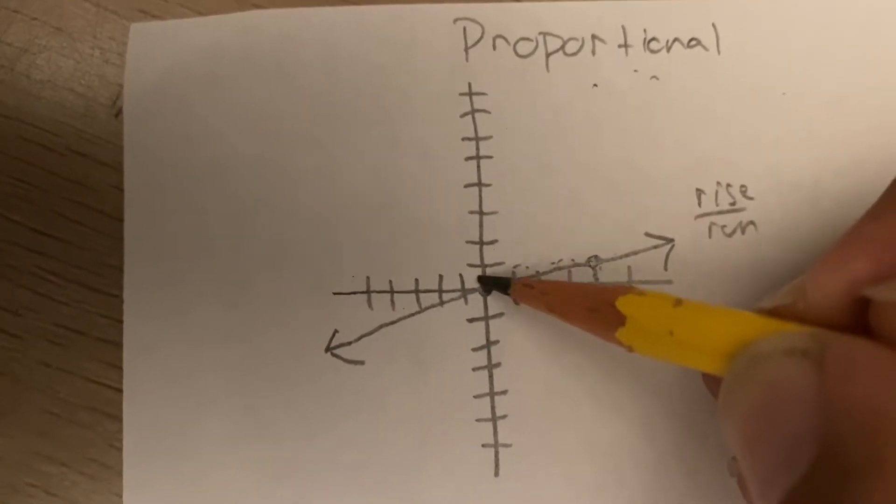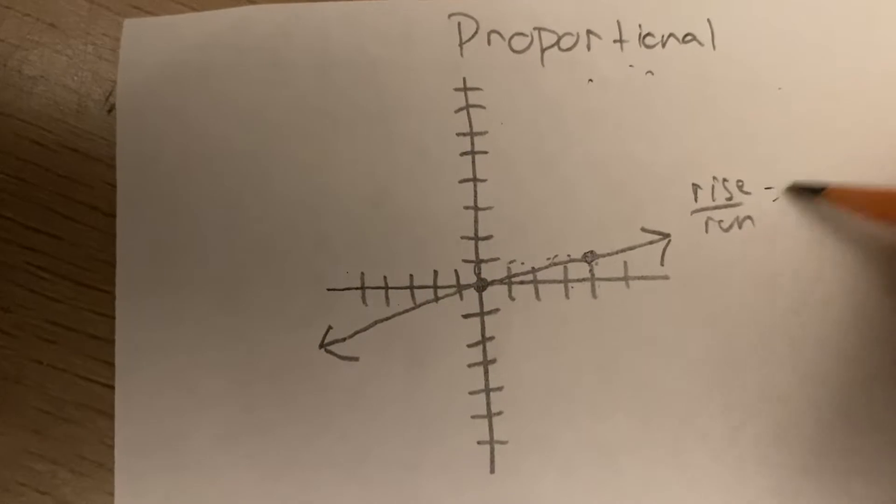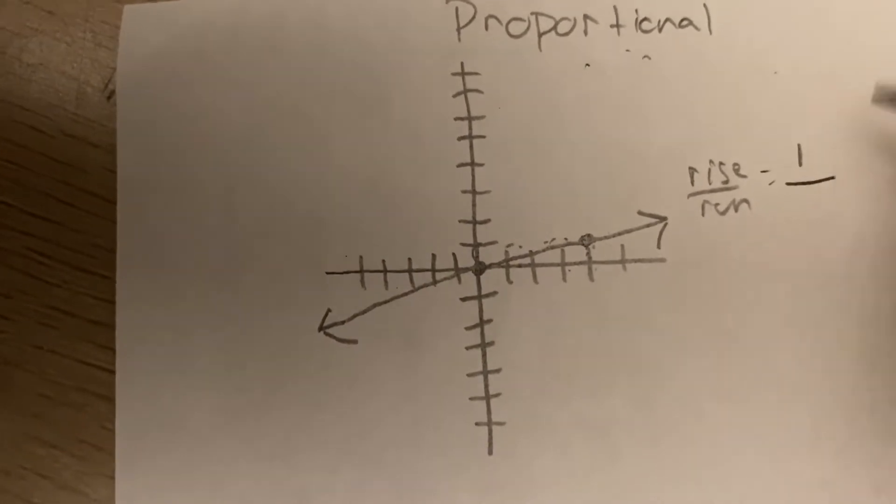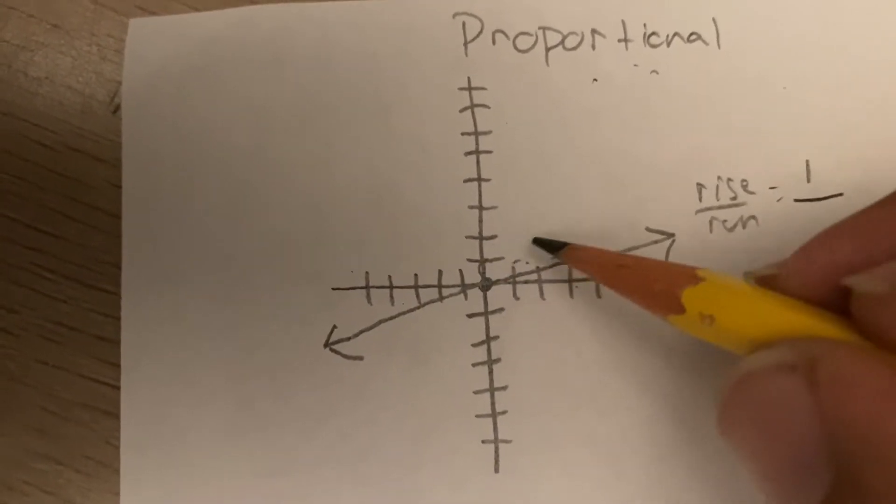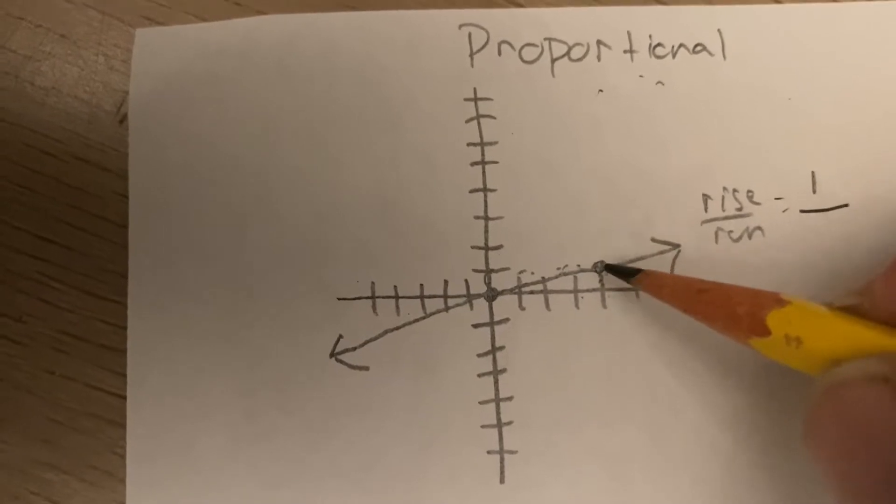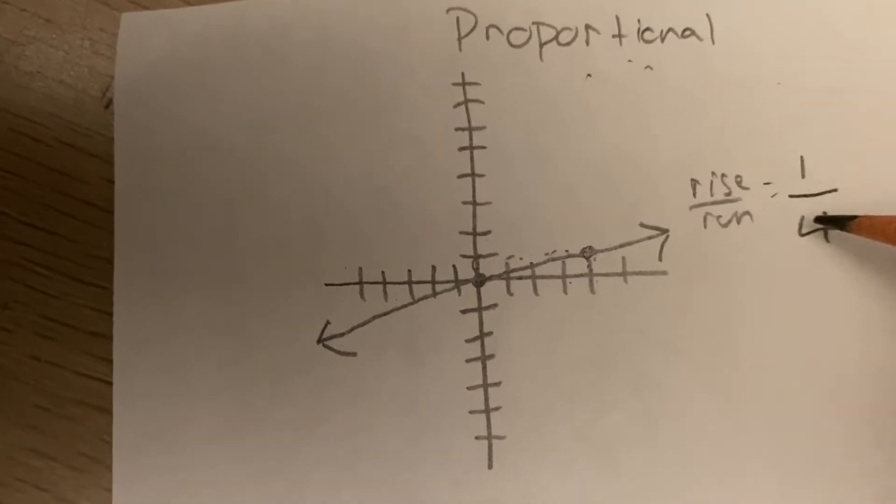So it is 1 up, so the rise is 1, and the run is 1, 2, 3, 4. So the slope is 1 over 4.